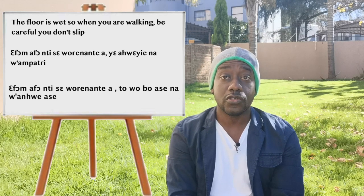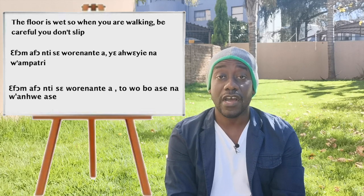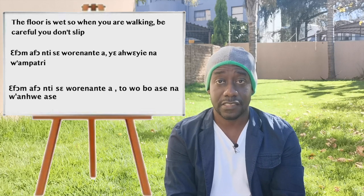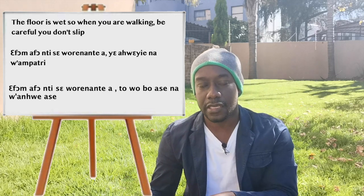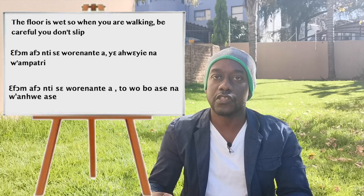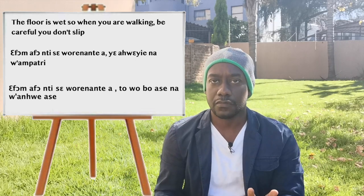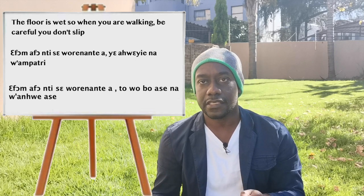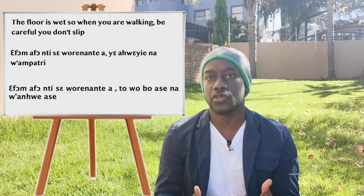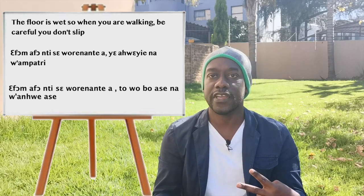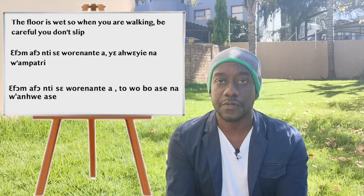You can also say: 'a fom afo inti sewu nantia' — which means the floor is wet so when you're walking — then add 'nawam petri' meaning so you don't fall over, which also means so you don't slip. Those are the two ways you can translate that in Chi.